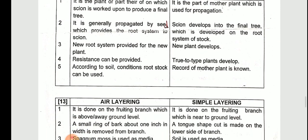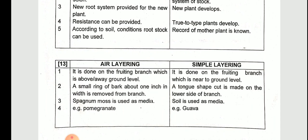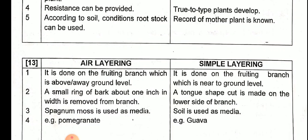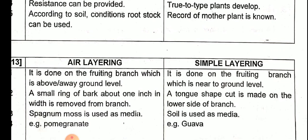The next difference is air layering versus simple layering — both are methods of layering already seen in 11th standard, including practicals. First point: in air layering, it is done on the fruiting branch which is above or away from the ground level. In simple layering, it is done on the fruiting branch which is near to the ground level.